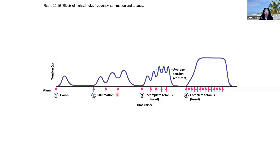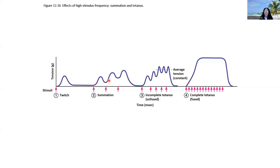With the third action potential, we're starting from an even higher amount of force generation and generating even more force, and then the muscle can fully relax. Summation is based on the fact that an action potential lasts a very short period, but while the initial action potential is maintaining its contraction, more action potentials can be generated, allowing for even more force generation.